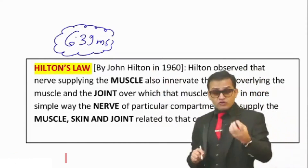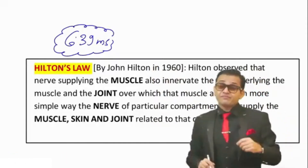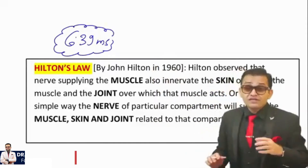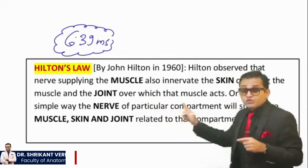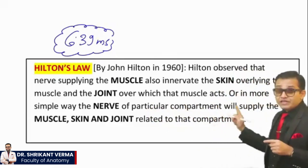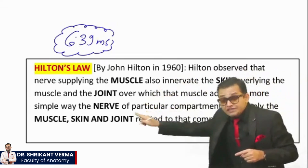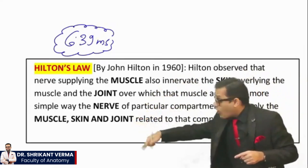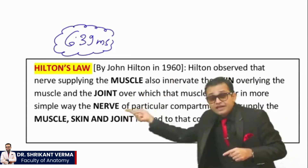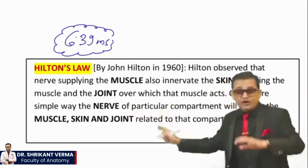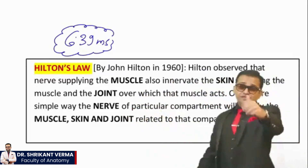Hilton — one anatomist, one surgeon — came and said that the nerve of a particular compartment will supply all the related skin, all the related muscle, and all the related joint. Agree everyone?